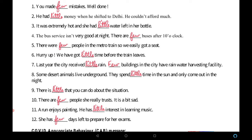Hurry up! We have got ___ time before the train leaves — 'little' time means not much time. Last year the city received ___ rain — 'little' rain, as rain is uncountable. Few buildings in the city have rain water harvesting facilities — 'buildings' is countable so we use 'few.' Some desert animals live underground; they spend ___ time in the sun and only come out at night — 'little' time.